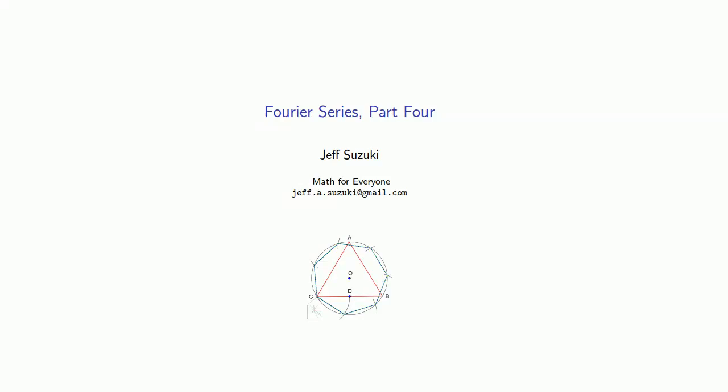Finding the coefficients of a Fourier series is a lot of work. Is there a way we can make the process more efficient? We can do that by considering some properties of functions, and the following three theorems are particularly useful.